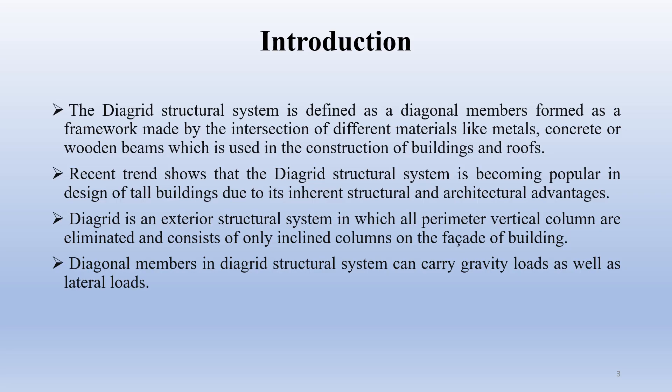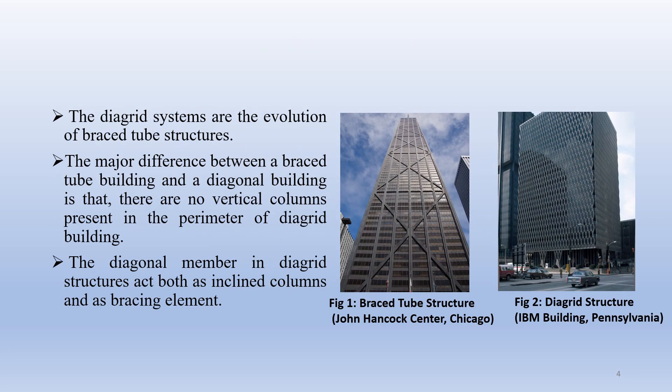The first question that arises is: what is a Diagrid Structural System? The Diagrid Structural System is defined as a diagonal member formed as a framework made by the intersection of different materials like metals, concrete, or wooden beams, used in the construction of buildings. Recent trends show that the Diagrid Structural System is becoming popular in the design of tall buildings due to its inherent structural and architectural advantages. Diagrid is an exterior structural system in which all perimeter vertical columns are eliminated, consisting of only inclined columns on the face of the building. Diagonal members in the Diagrid Structural System can carry both gravity load and lateral load. The Diagrid System is an evolution of the Braced Tube Structure.